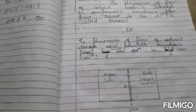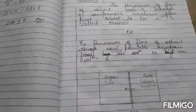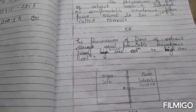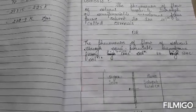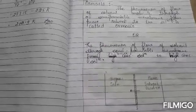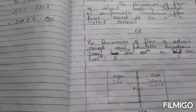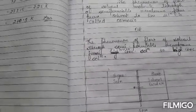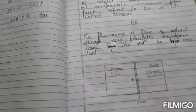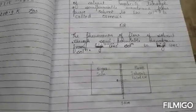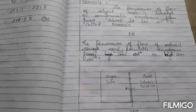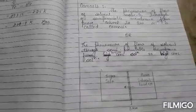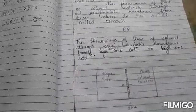Before starting osmotic pressure, I want to tell you about semi-permeable membrane. A semi-permeable membrane is a membrane which allows the movement of solvent molecules through it. These membranes appear to be continuous sheets or films. They do not allow the solute molecules to pass through, because the semi-permeable membrane has very tiny pores. The solute molecules are bigger in size, so they cannot pass through it.